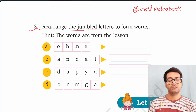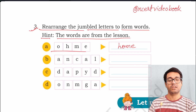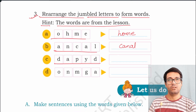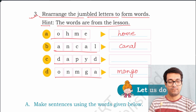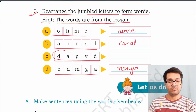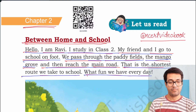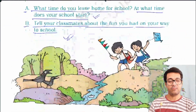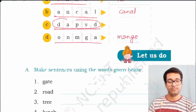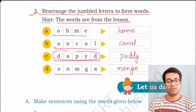Third: Rearrange the jumbled letters to form words. Hint: the words are from the lesson. The words are: home, canal, and paddy — P, A, D, D, Y — as well as mango.